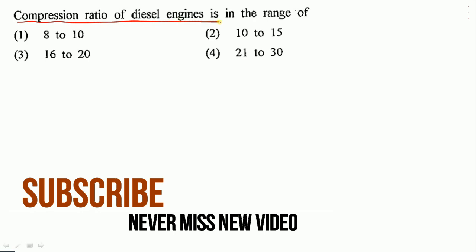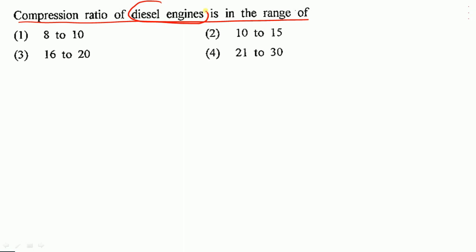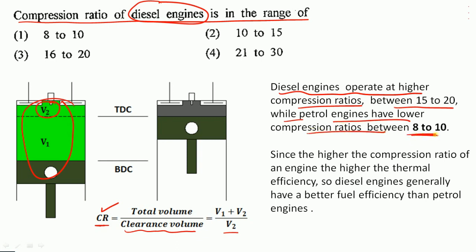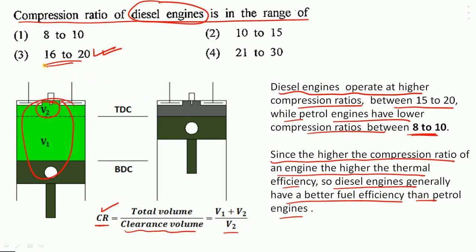The compression ratio of a diesel engine is in the range of? Compression ratio is total cylinder volume divided by clearance volume. Diesel engines operate at higher compression ratios between 15 to 20, while petrol engines have lower compression ratios between 8 to 10. The higher the compression ratio, the higher the thermal efficiency, so diesel engines generally have better fuel efficiency. Option 3 — 16 to 20 — is the correct option.